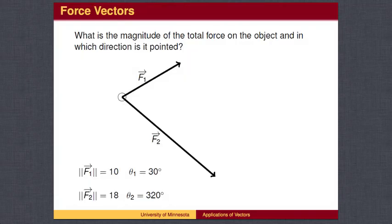One application of vectors is to add physical forces acting on an object. We are often given the forces in polar coordinates. In this example, force F1 is pushing with a strength of 10 newtons in a direction of 30 degrees, and force F2 is pushing with a strength of 18 newtons in a direction of 320 degrees.